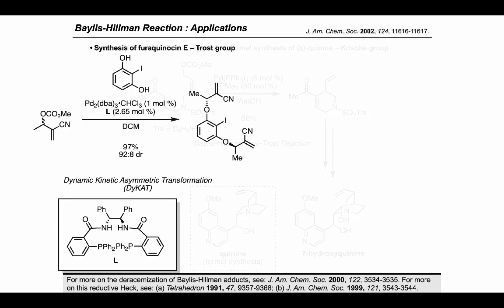In this next application, I want to look more at the chemistry of racemic Baylis-Hillman adducts. In their total synthesis of furoquinacin E, the Trost group showed that these types of adducts can be engaged in a dynamic kinetic asymmetric transformation, or DYKAT, by using palladium(0), a Trost ligand, and an iodo-resorcinol nucleophile to generate a diastereo- and enantio-enriched product.